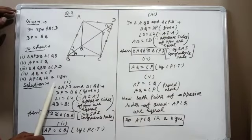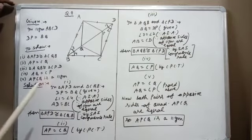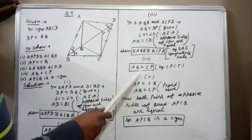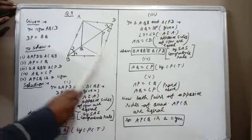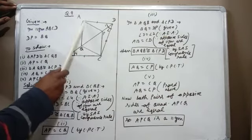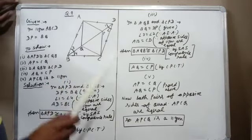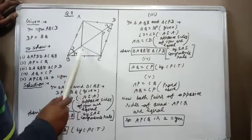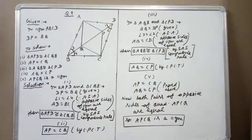This is new — in previous questions we did not prove that a quadrilateral is a parallelogram. We recall that if any one of the four conditions is proved, we can say it is a parallelogram. Here, AP equals CQ and AQ equals CP — both pairs of opposite sides of quadrilateral APCQ are equal. Therefore, APCQ is a parallelogram.